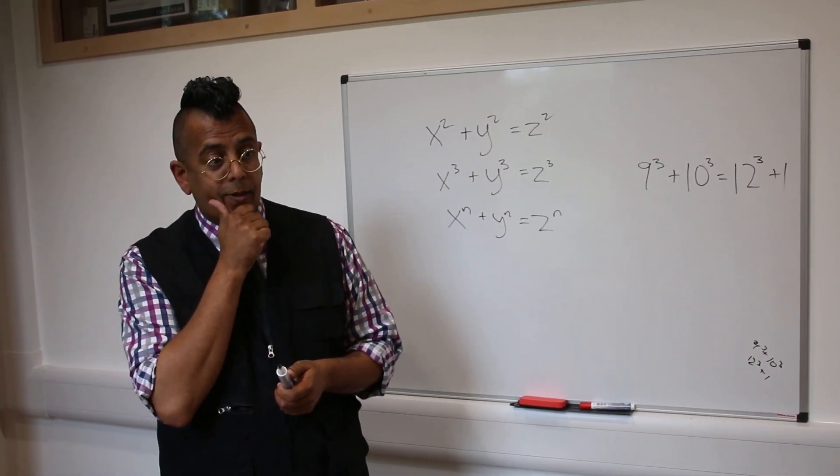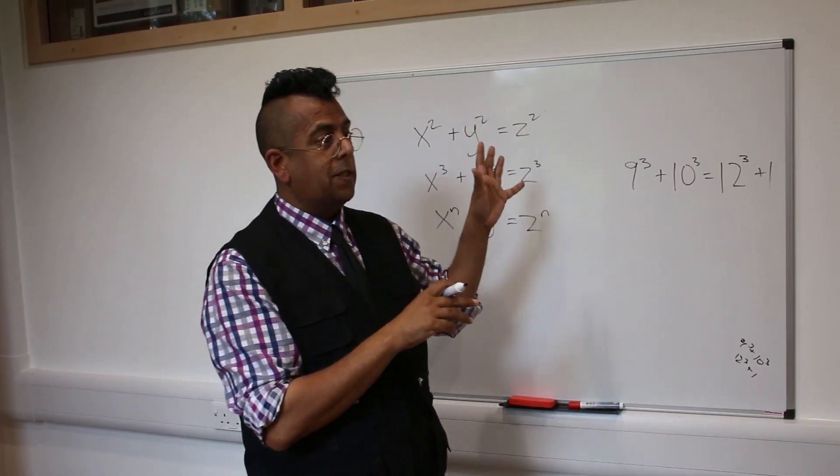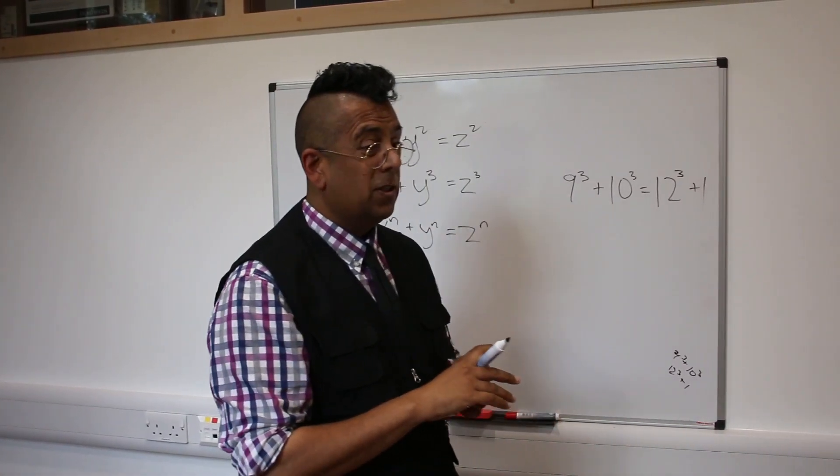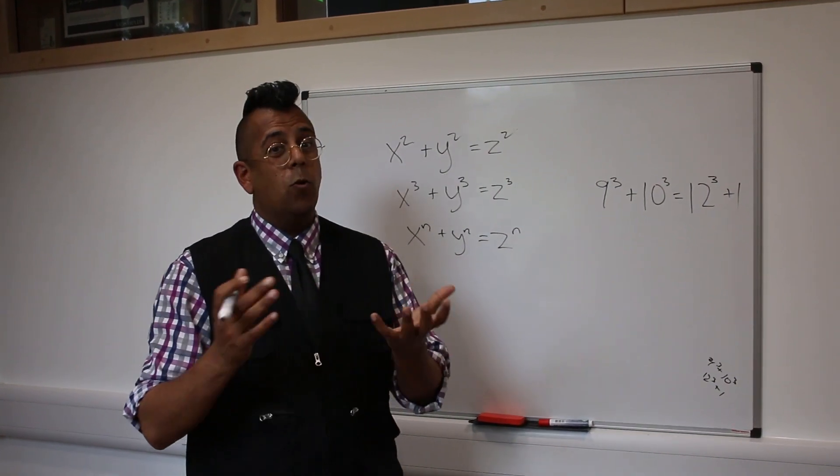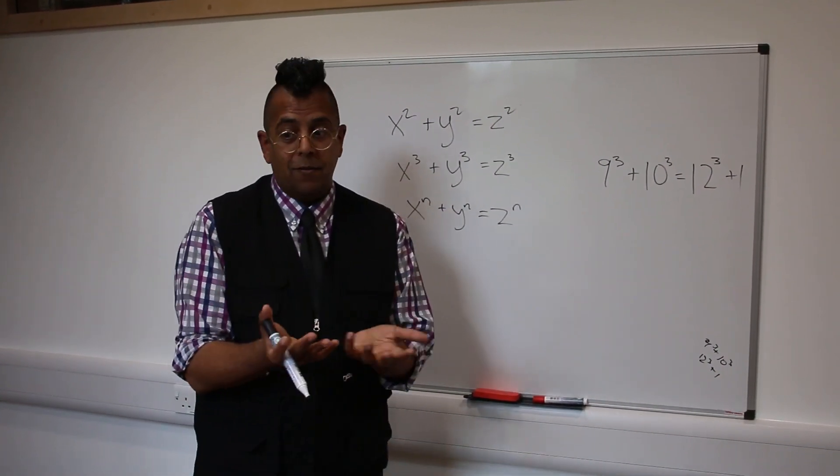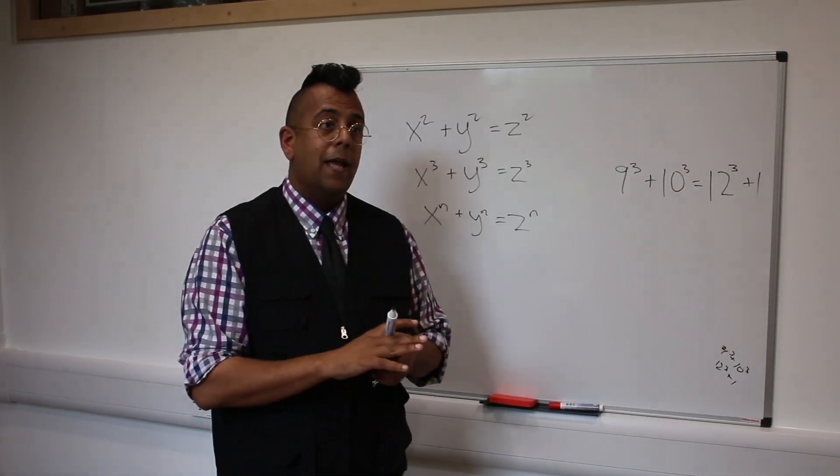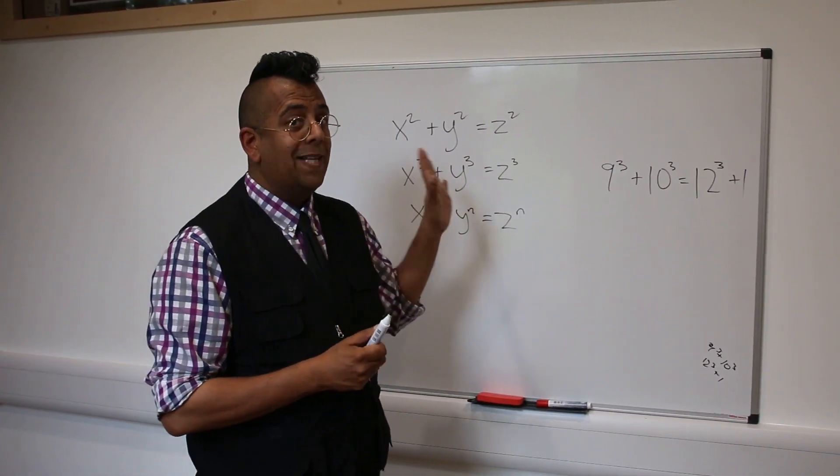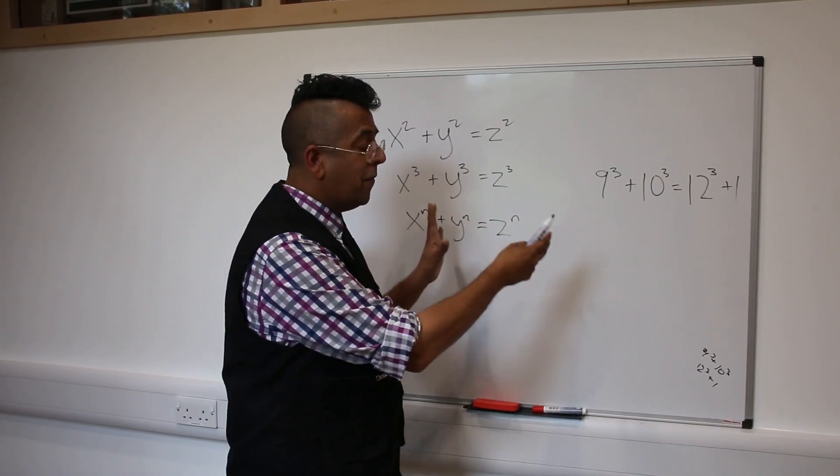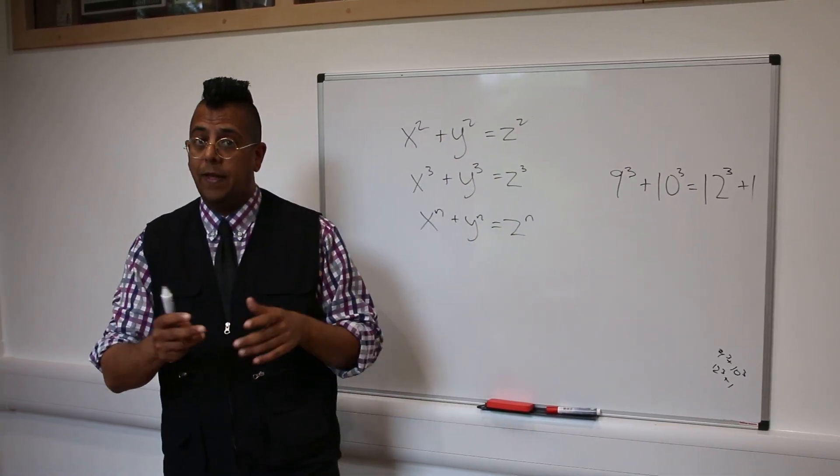And suddenly, from being the world's most famous mathematician, he was the mathematician who'd made the most famous blunder. I call it a blunder, but it was a very subtle mistake from a very great mathematician. But the long and the short of it was, the proof didn't exist. Unless the proof is perfect and complete, it's not worth anything.